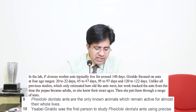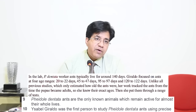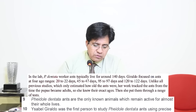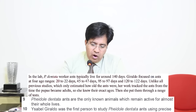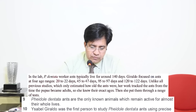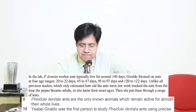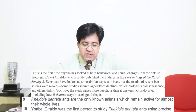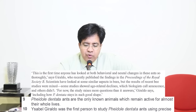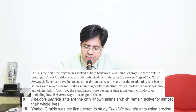In the third paragraph, they mention: 'Giraldo focused on ants at four age ranges.' They don't mention here that she was the first person. Let's continue. In the third-last paragraph, they talk about the same scientist and say: 'This is the first time anyone has looked at both behavioral and neural changes in these ants so thoroughly,' says Giraldo, who recently published the findings in the Proceedings of the Royal Society. But the key phrase is in the third paragraph.